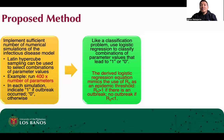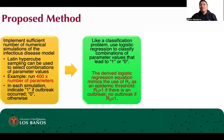Second, like a classification problem, we use logistic regression to classify combinations of parameter values that lead to 1 or 0. The derived logistic regression equation mimics the use of R0 as a dependent threshold: if R0 is greater than 1, then there is an outbreak; no outbreak if R0 is less than 1.